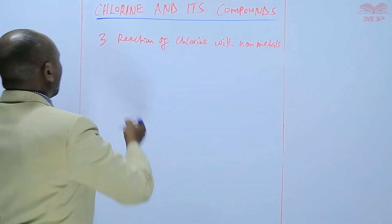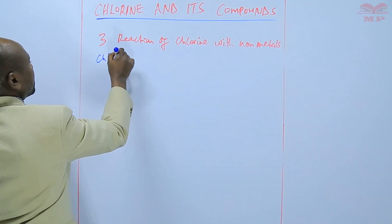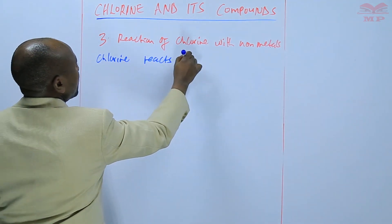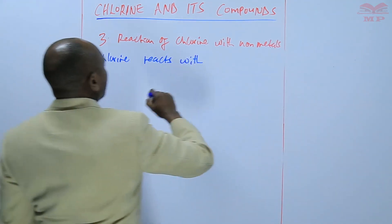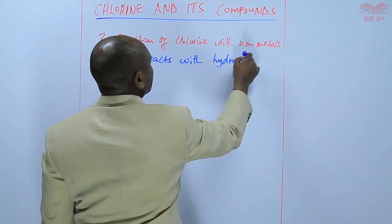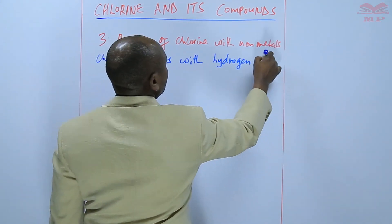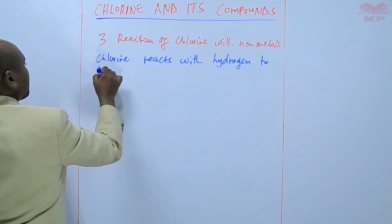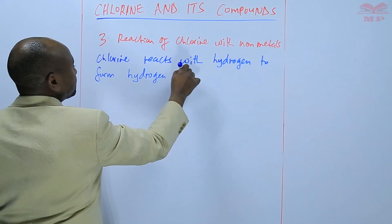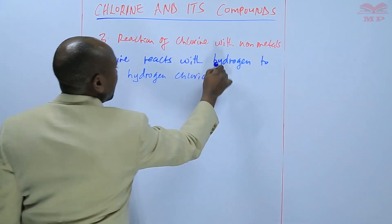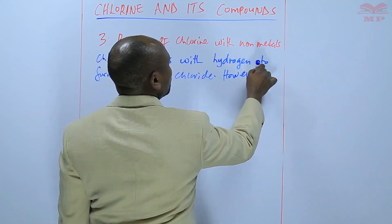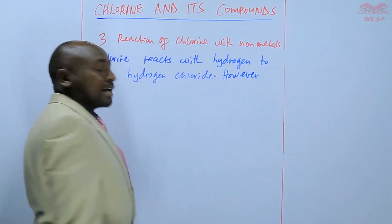For example, chlorine reacts with hydrogen to form hydrogen chloride. However, this reaction does not take place at room temperature.